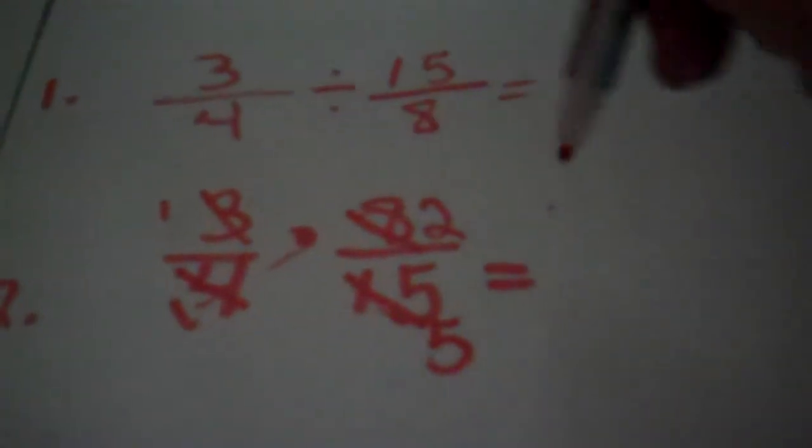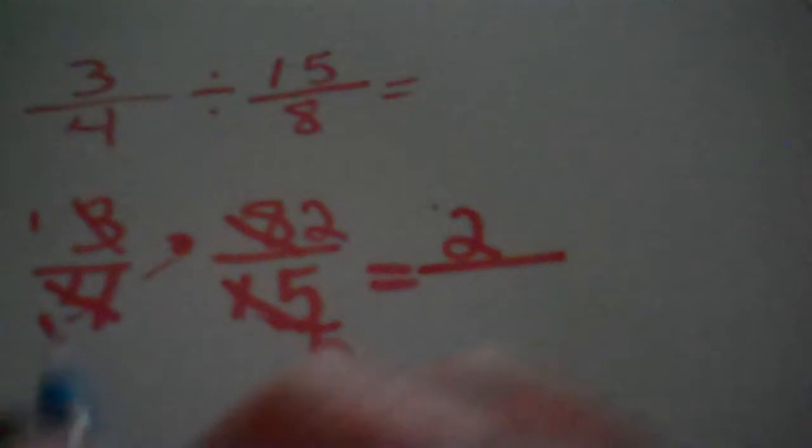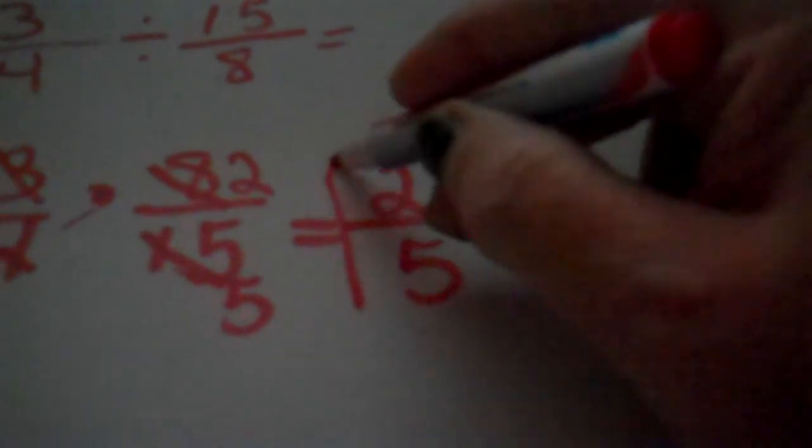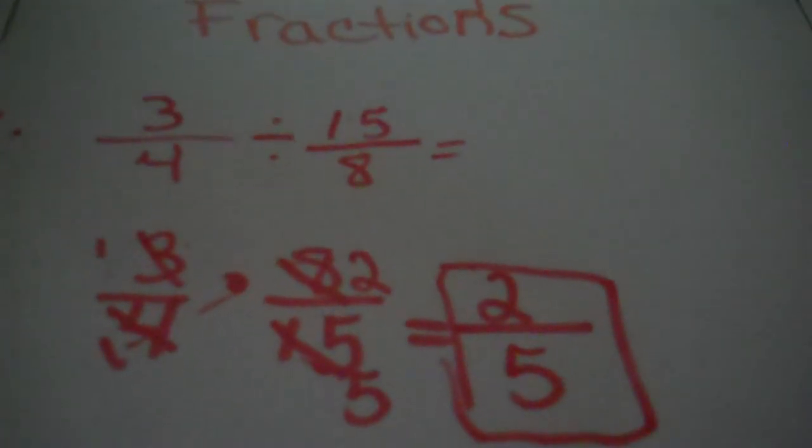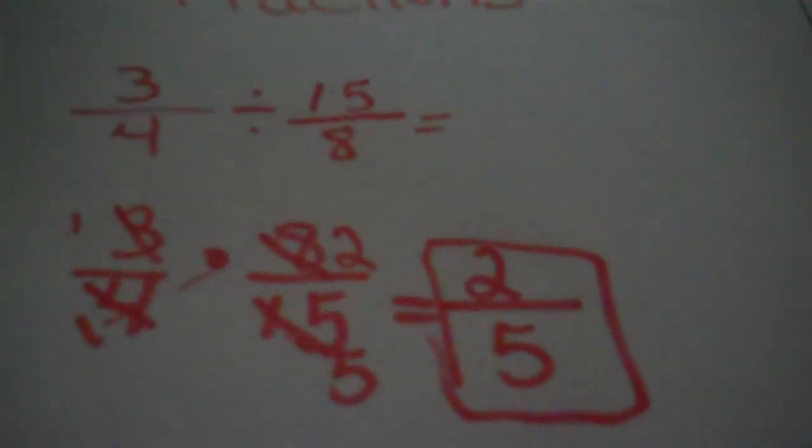Now we're going to multiply across. One times two is two. And one times five is five. And that is as simple as that. Now, I will have practice problems later. But this gives you an idea of how to divide your fractions. All you have to do is practice. And you can go anywhere and do anything. Have a good day.